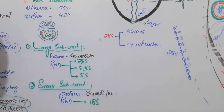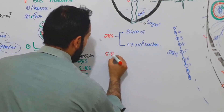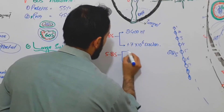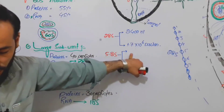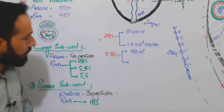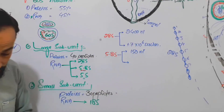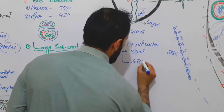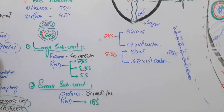Now for the 5.8S RNA: how many nucleotides are there? In the case of the 5.8S RNA there are 150 nucleotides. If you weigh those 150 nucleotides, the molecular weight is about 3.8 × 10⁴ Daltons.